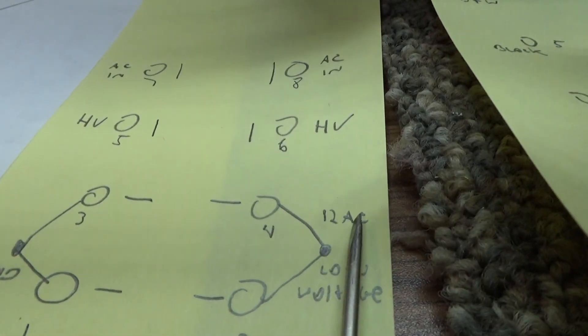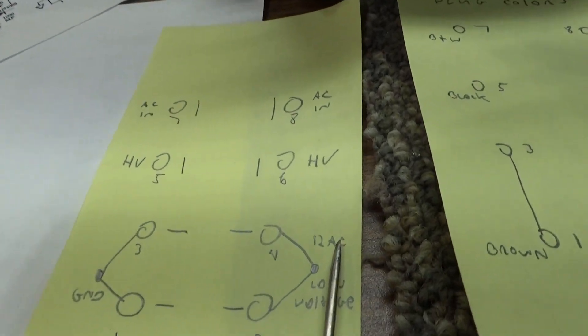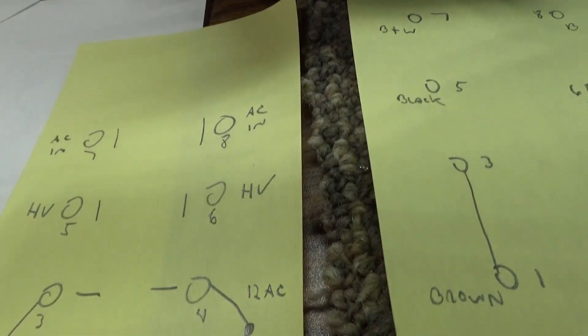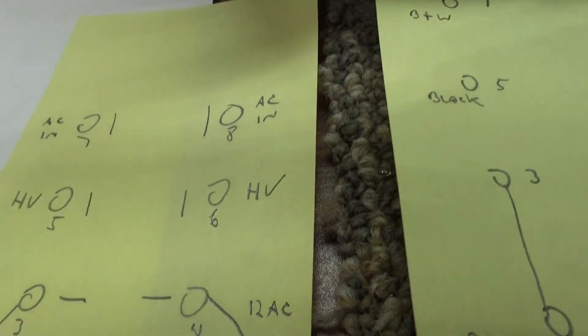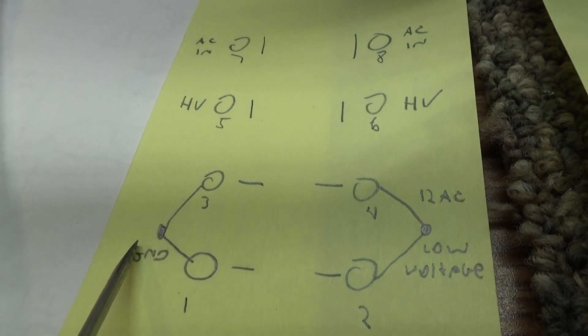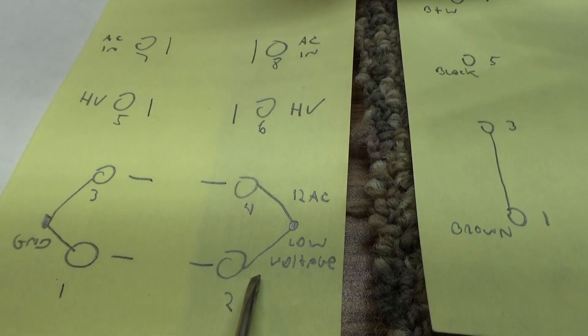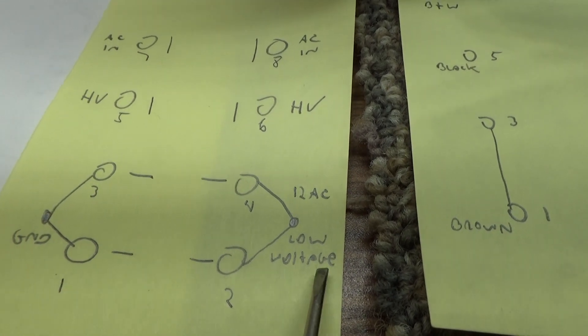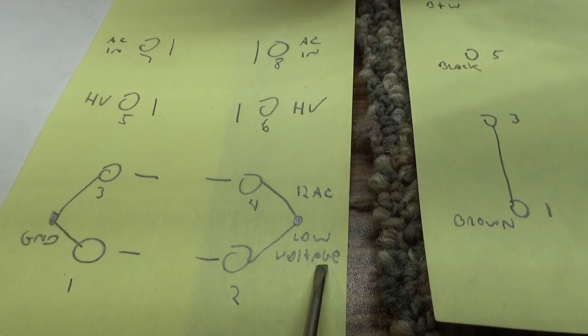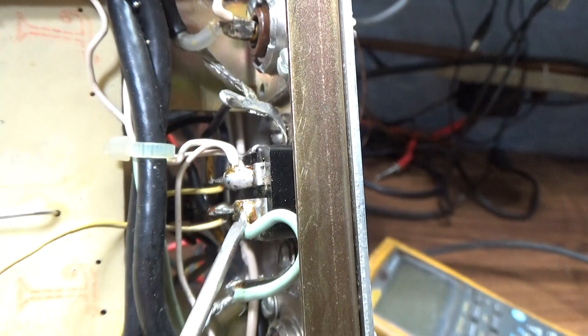Okay, then over here with this pinout, pins one and three are tied together and they go to ground. Pin two and four are tied together, those would be at the bottom, and that's the low voltage coming in.